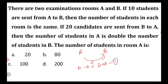Similarly, if 20 candidates are sent from B to A, then the number of students in A is double the number of B — that is, A plus 20 is equal to 2 into B minus 20.